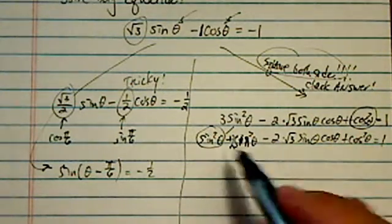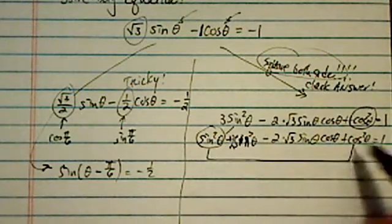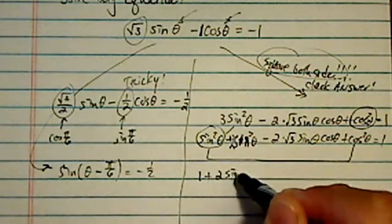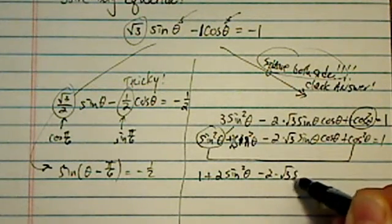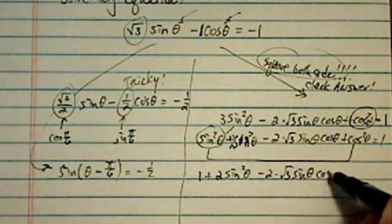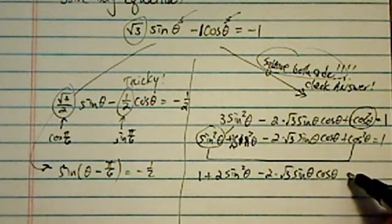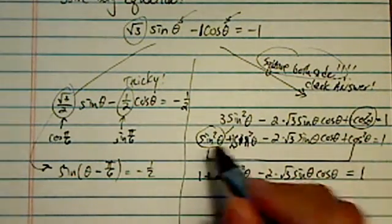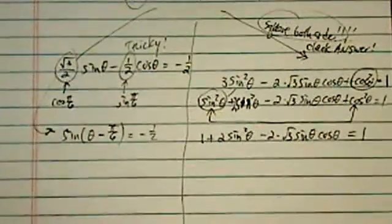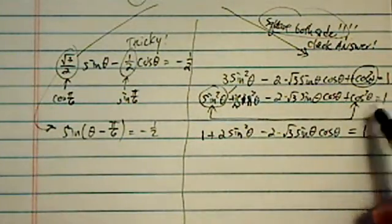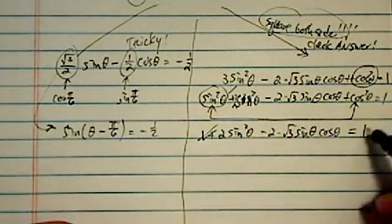So now I'm going to cancel those two because this is 1 + 2sin²θ - 2√3sinθcosθ equal to 1. I added those two using the trig identity that sin²θ + cos²θ is 1. I'm going to cancel this one.